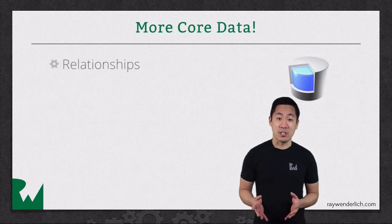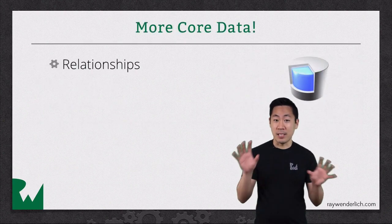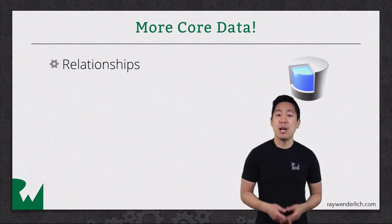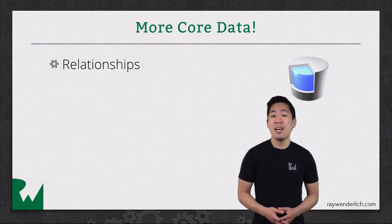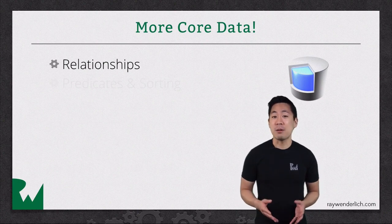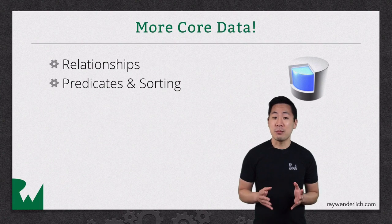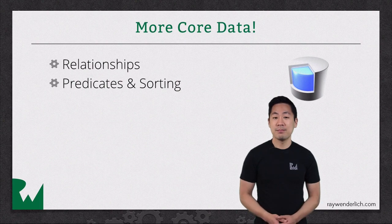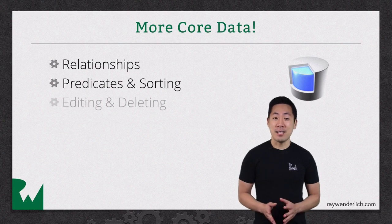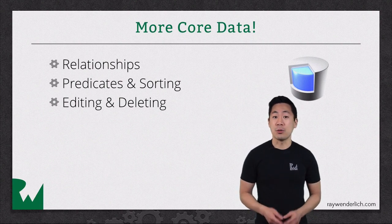The next video talks about relationships. You could have an object graph made up of unrelated data, but most of the time your objects will be related to each other somehow, and we'll talk about how to model these relationships and what those relationships will look like from code. In video four, we'll talk about predicates and sorting — you'll be able to tell CoreData to filter and sort the results that come back when you fetch data. We'll wrap up the instructional videos in video five with a discussion of editing and deleting data. There have been some recent additions to the CoreData APIs to support bulk updates and bulk deletes, which we'll look into as well.